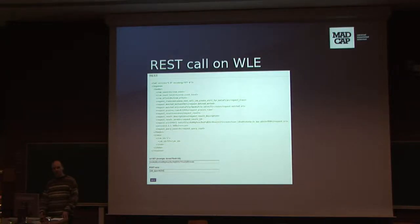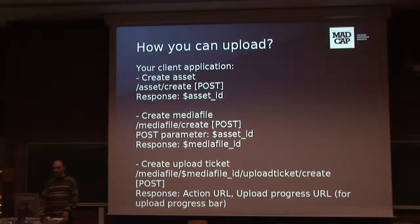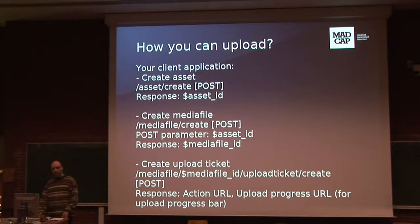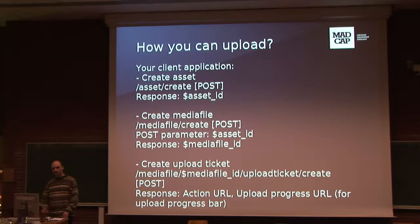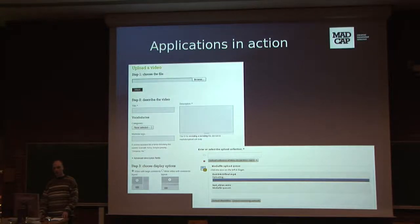The White Label demo frontend has a nice tool for developers — you can test your REST calls directly. How can you upload a video? Your frontend application should create an asset with the asset-create REST call. The response is a unique asset ID. Then you can create a media file — the response is a unique media file ID. Then you create an upload ticket for security. The response is an action URL where your form should be submitted, and there is an upload progress URL for jQuery progress bars. These are real applications — you see the progress bar, the upload fields, the metadata fields, and others.